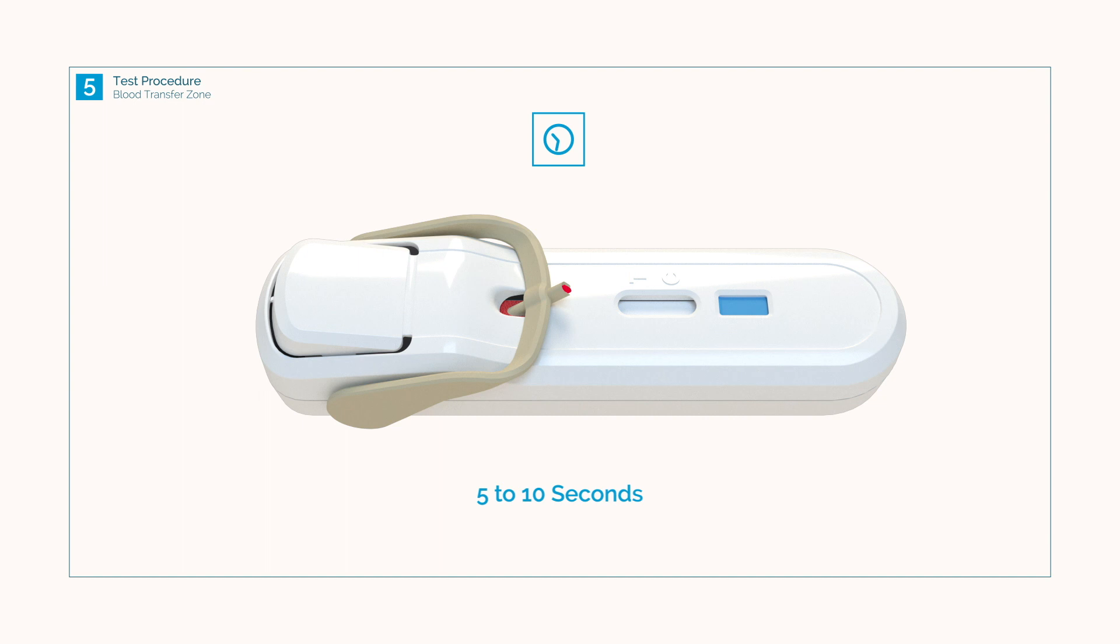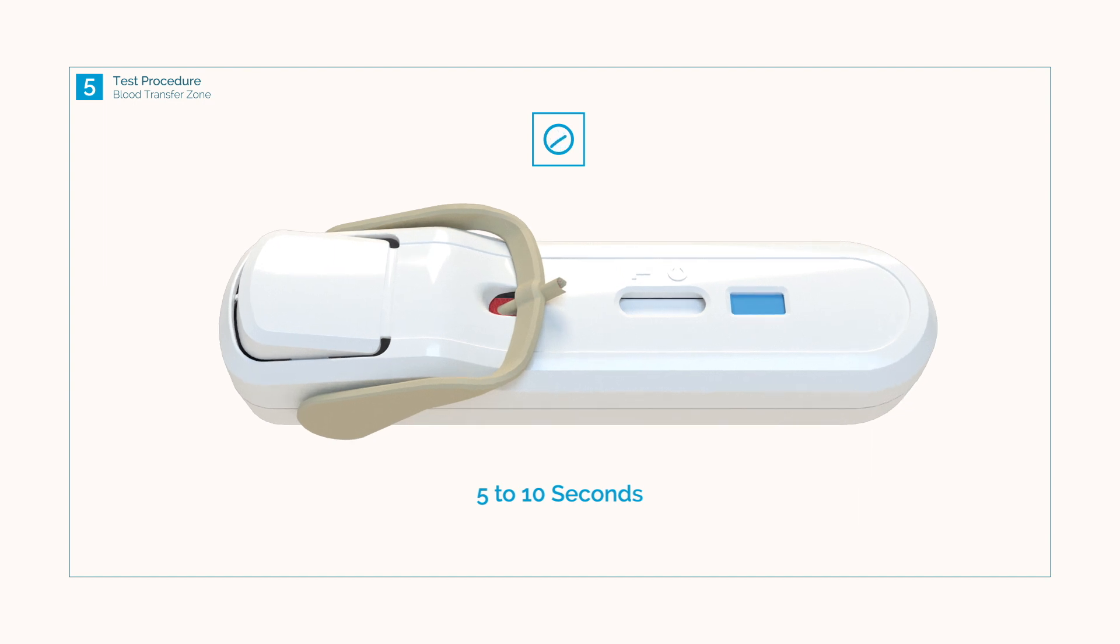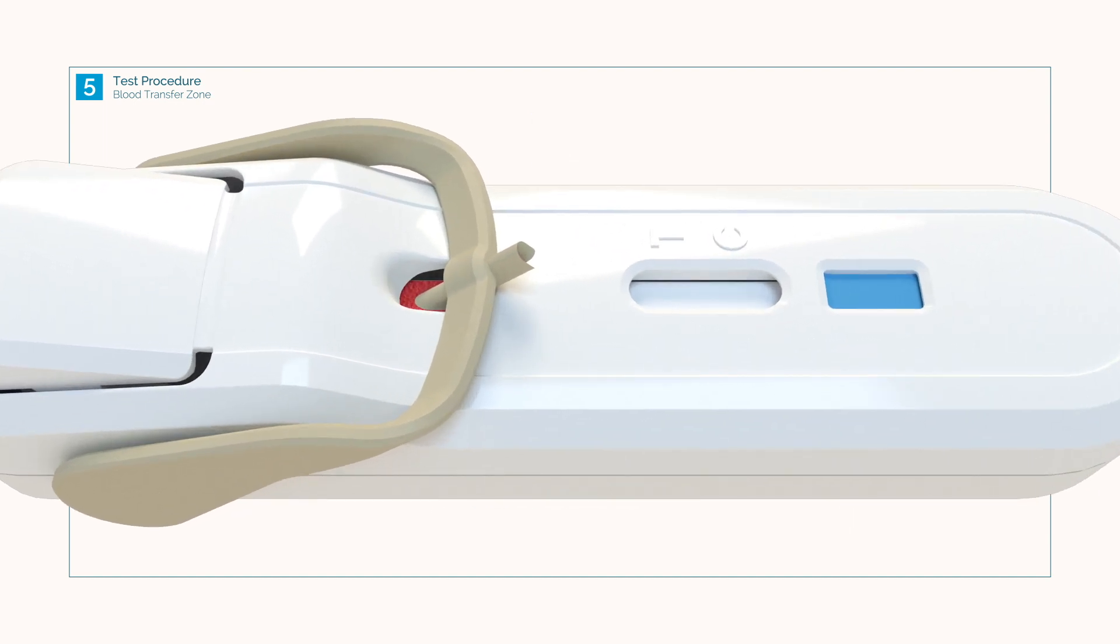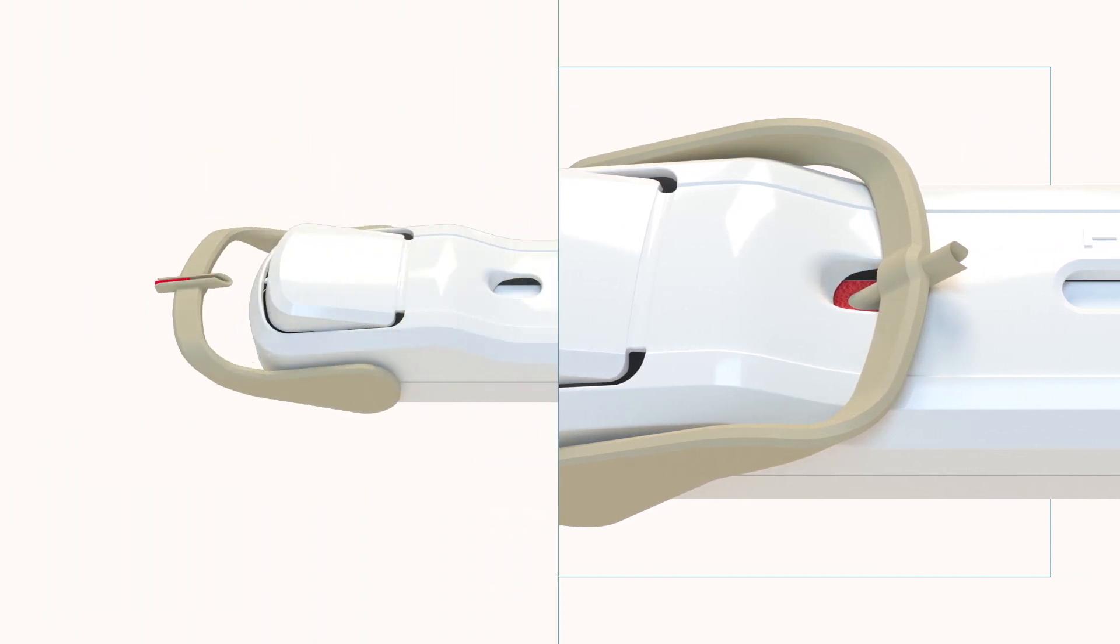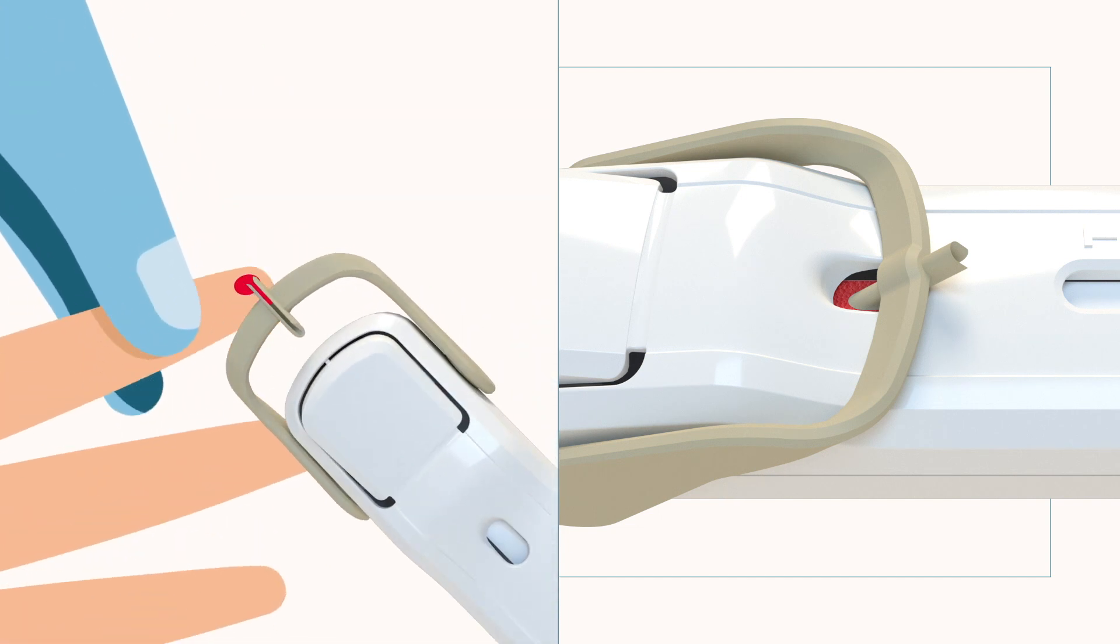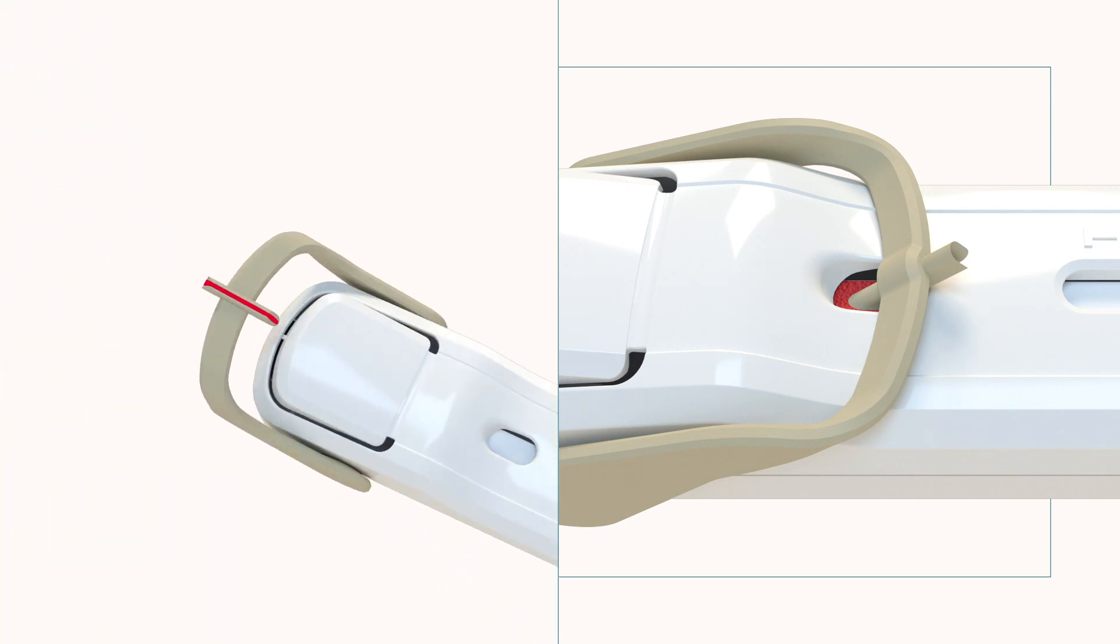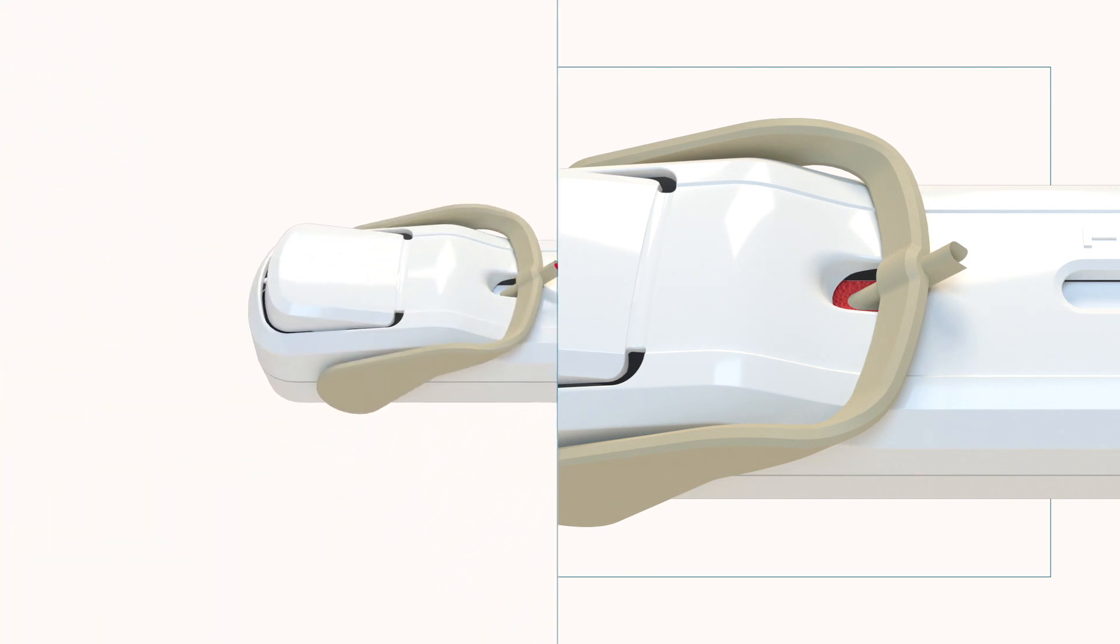Lock the tube into position and wait 5-10 seconds for the blood to be transferred to the test strip. Blood should be visible in the blood transfer zone. If the blood doesn't immediately transfer, reverse the blood collection tube's rotation and add additional blood to ensure it is completely filled. Return the blood collection tube to the blood transfer zone.